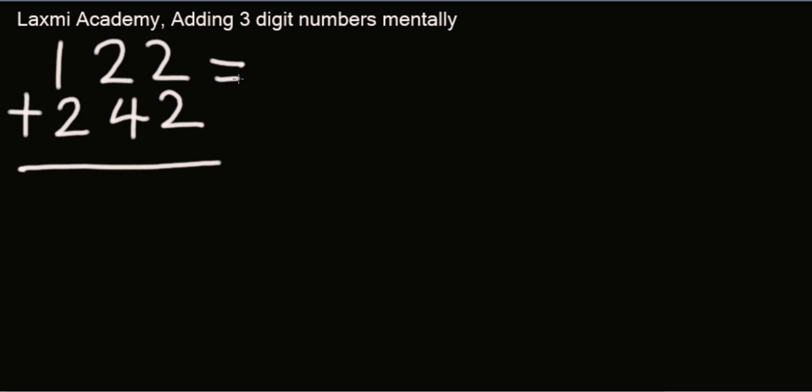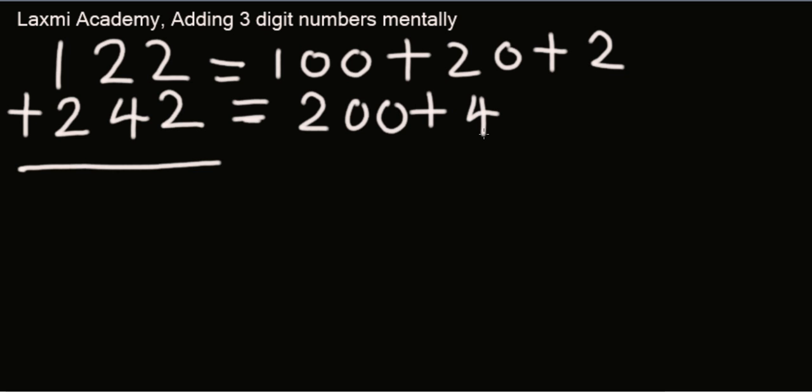Now here the value of 1 is 100 because 1 is in the hundreds place. The value of 2 is 20 because 2 is in the tens place, and the 2 is in the units place so it's 2. So 122 can be written as 100 plus 20 plus 2. Same thing with 242. The value of 2 is 200, the value of 4 is 40, and the value of 2 is 2.